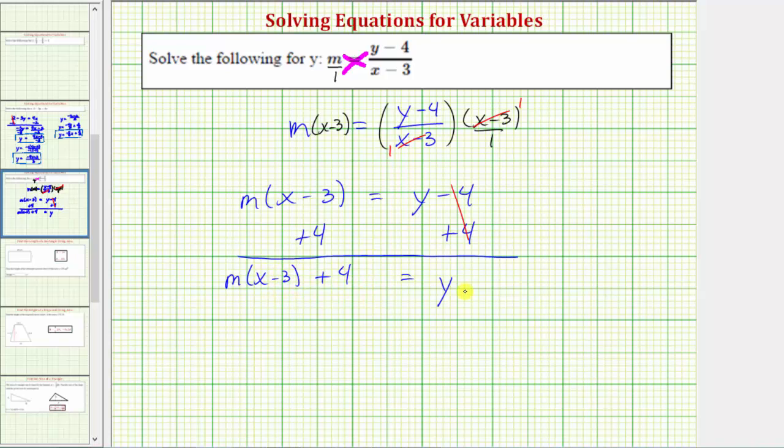Let's go ahead and change the order of our equation here. We now know y equals m times the quantity x minus three plus four.